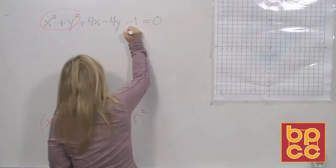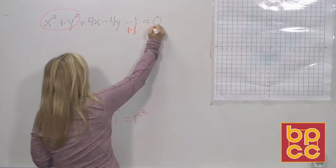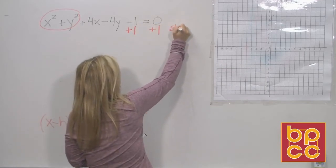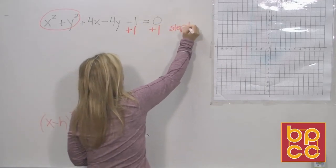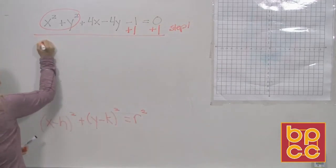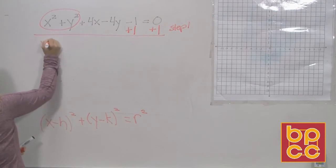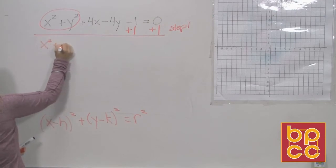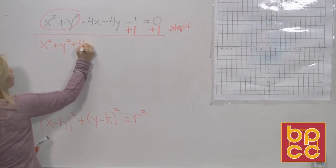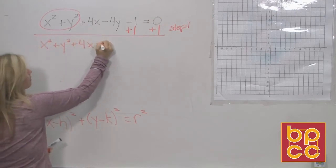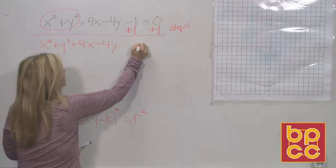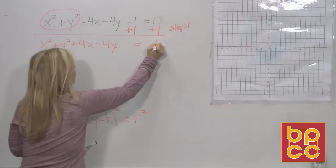Step one is to add this 1. So now we have x² + y² + 4x − 4y = 1.